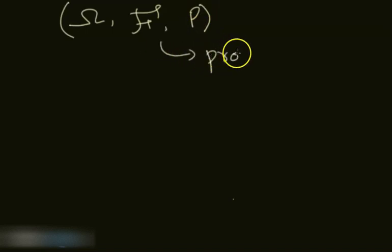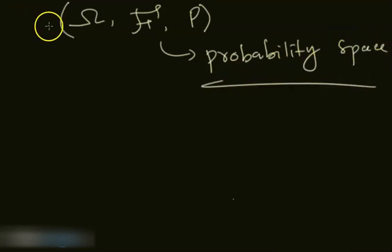So now if you have sample space omega and a sigma field F and a probability measure P, then you form this triplet. And this triplet is called probability measure space, or probability space. In our course we will be talking about this triplet.